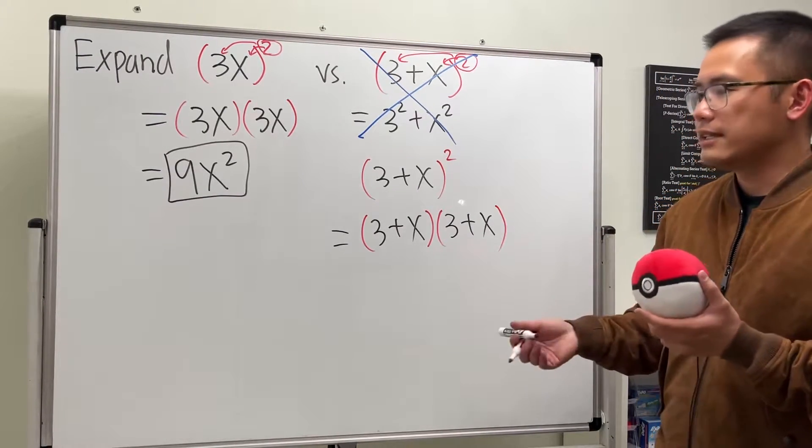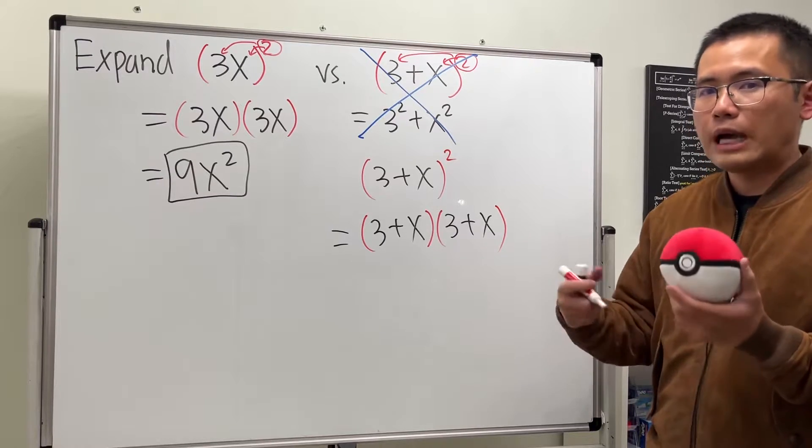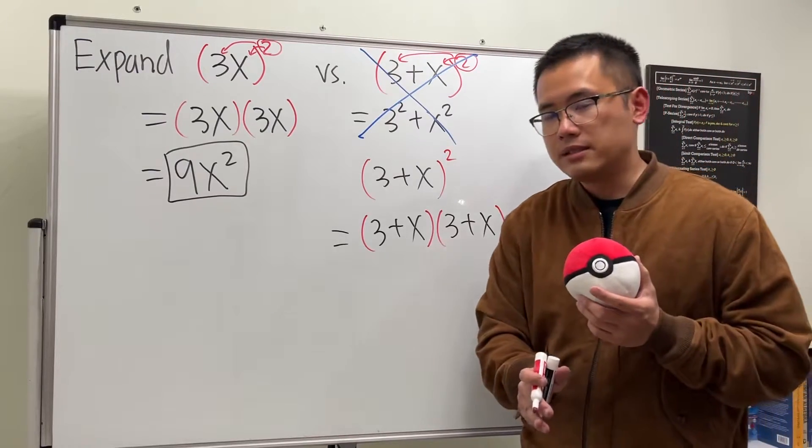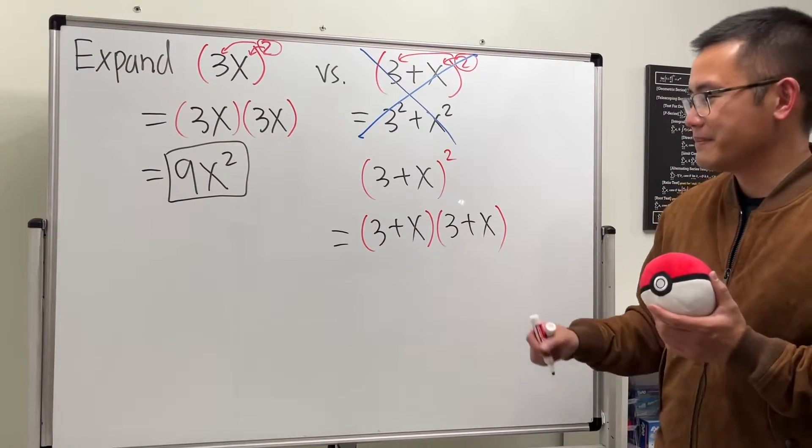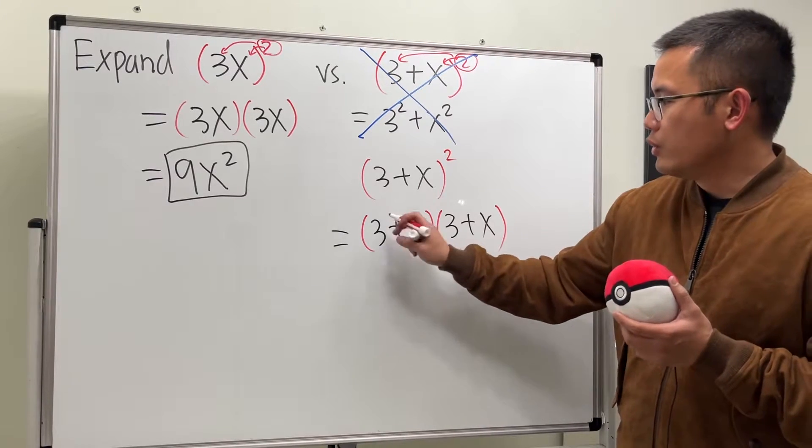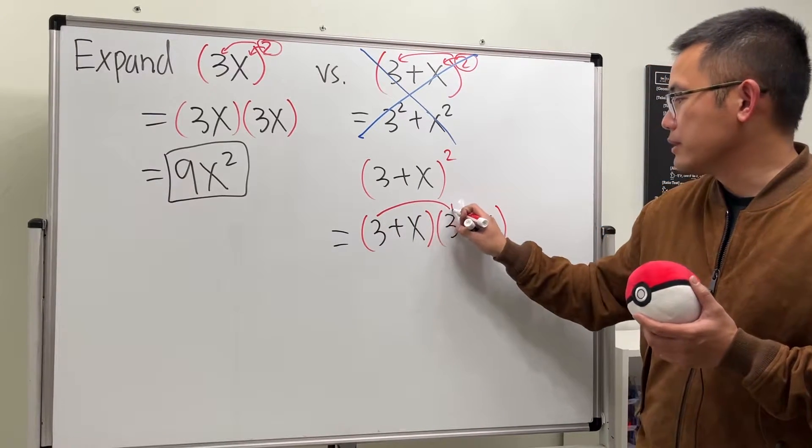Cool. And now this right here is called the FOIL method, and sometimes I call this the arrow method because I will just be drawing arrows. And you can also use the box method. I will show you guys the box method later.